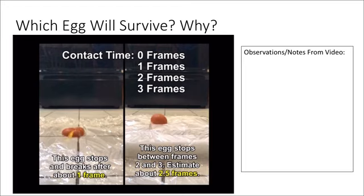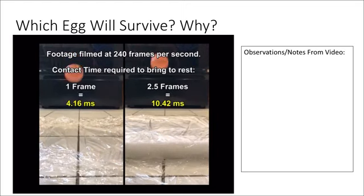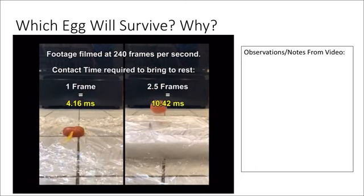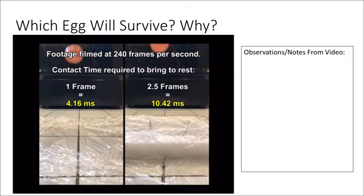We can convert these frames into times like so. Given that the video was framed at 240 frames per second, it looks to see that the egg on the right stops in about 10.42 milliseconds while the egg on the left stops more abruptly with 4.16 milliseconds time to stop.